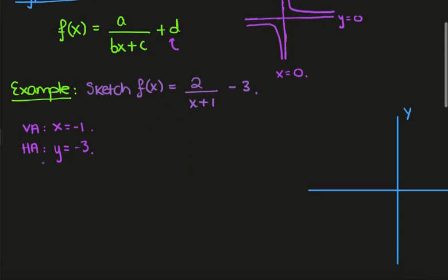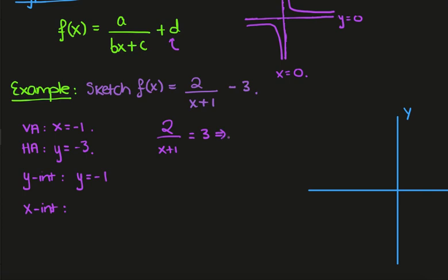The final thing to do is compute any x or y intercepts. Setting x equal to 0, we get the y intercept: 2 over 1 minus 3, which gives y equals minus 1. For the x intercept, we set the function equal to 0, giving 2 over x plus 1 equals 3. So 2 equals 3x plus 3, meaning 3x equals minus 1, so x equals minus 1 over 3.